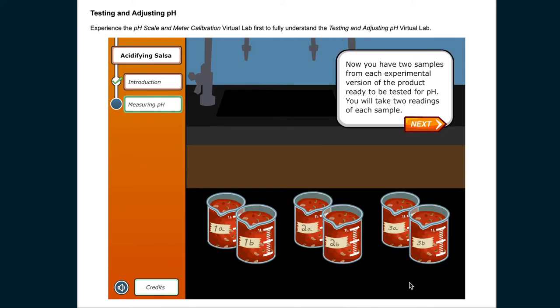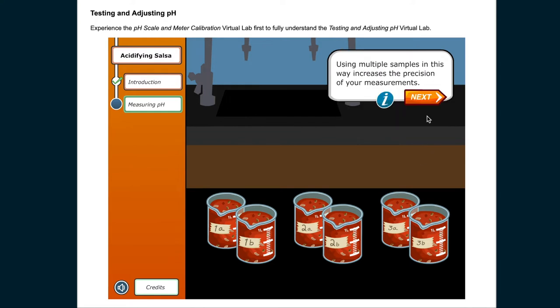Now you have 2 samples from each experimental version of the product ready to be tested for pH. You will take two readings of each sample. Using multiple samples in this way increases the precision of your measurements.